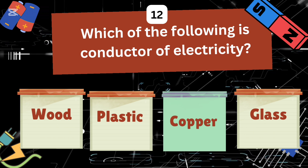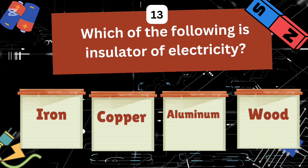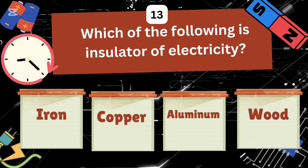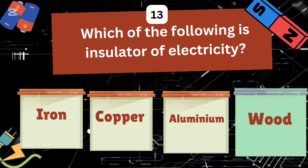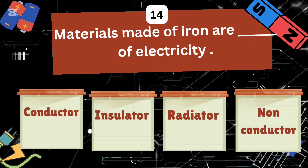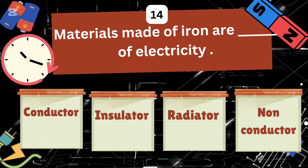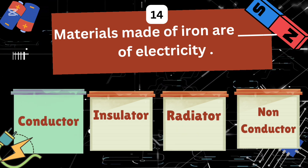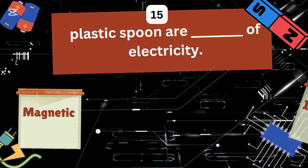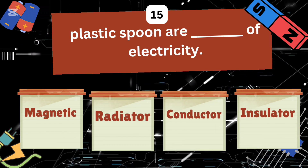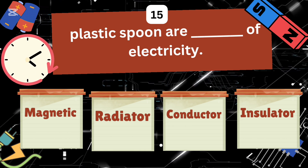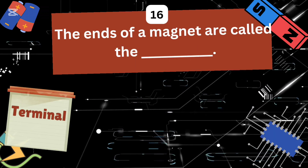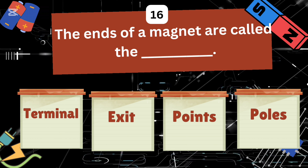Copper is a conductor of electricity. Which of the following is an insulator of electricity: iron, copper, aluminum, or wood? The right answer is wood — wood is an insulator. Materials made of iron are conductors of electricity. A plastic spoon is an insulator of electricity.